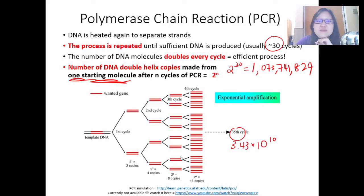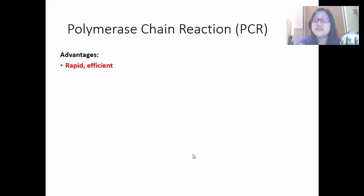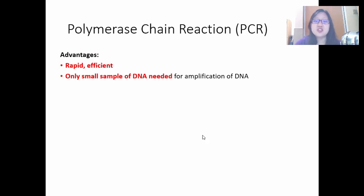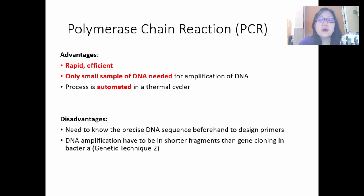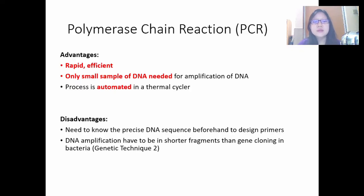Let's talk about the advantages of PCR. It is a rapid and very efficient process. Only a small sample of DNA is needed for the amplification, and the process is automated in a thermal cycler. The disadvantage is that you need to know the precise DNA sequence you want beforehand, because you need to design those primers to mark the start and end of the amplification region. Also, in PCR you can only amplify shorter fragments — you cannot really amplify very long DNA or the whole genome of an organism. To do this, we need to use genetic technique 2, which is gene cloning or recombinant DNA technology, which we will learn in the next video.